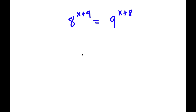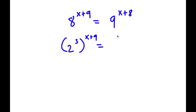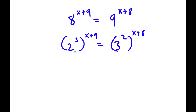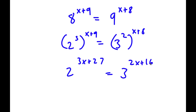In this problem, I have 8 to the power of x plus 9 is equal to 9 to the power of x plus 8. I'm going to first rewrite 8 as 2 to the power of 3, and 9 as 3 to the power of 2. So now I have 2 to the power of 3 to the power of x plus 9, equal to 3 to the power of 2 to the power of x plus 8. This simplifies to 2 to the power of 3x plus 27, equal to 3 to the power of 2x plus 16.